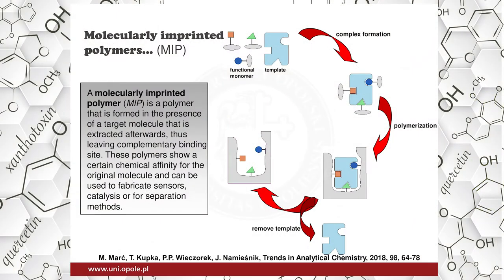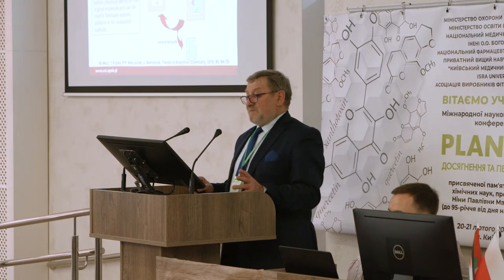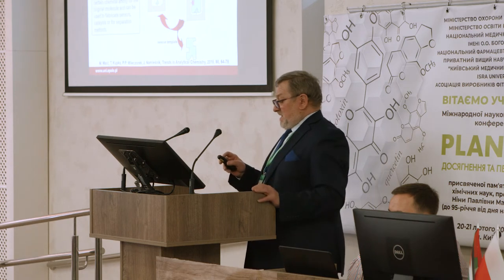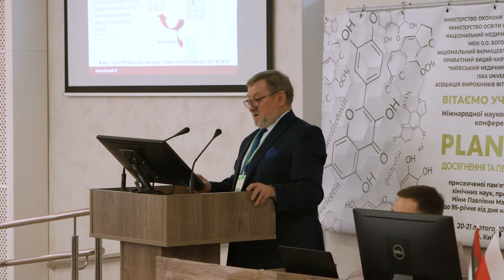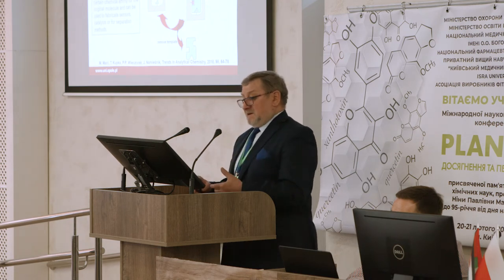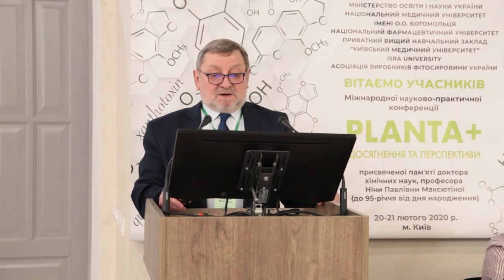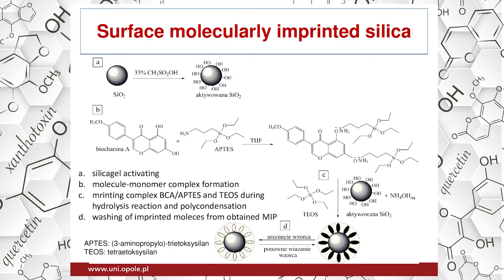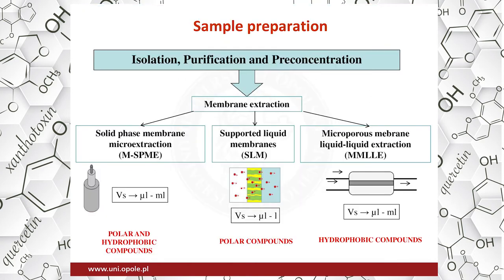And also in plasma samples, just to have a method for controlling these compounds in real human body fluids. Very interesting is a specific type of polymer sorbent like molecularly imprinted polymers. They work like enzymes because they have a specific place where a single compound or one type of compound can be sorbed. We can synthesize such specific sorbents for specific compounds or specific types of compounds. We use it for determining phytoestrogens in real urine samples — the limit of detection is less than 0.1 in most cases — and the recovery is very good.